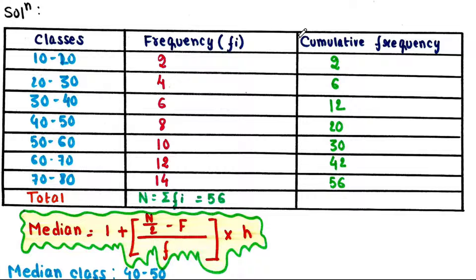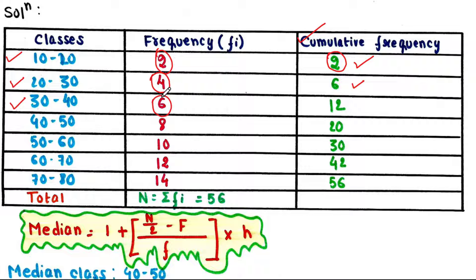First we will calculate cumulative frequency. Please observe this carefully: the cumulative frequency and frequency are the same for the first value, since it is the first data in the table. For each subsequent class, we add its frequency to the cumulative frequency of the preceding class — for example, 6 plus 6 equals 12. In this way we can calculate the cumulative frequency of all classes.